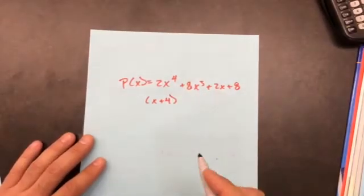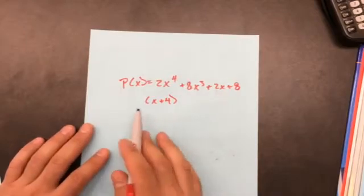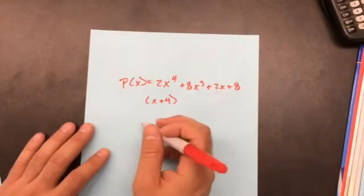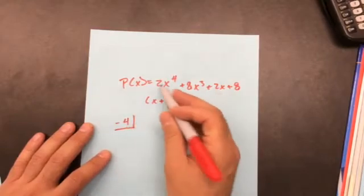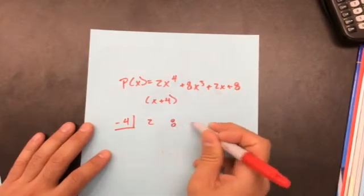Find the other factors. What I'm going to do right here is I'm going to factor this out. So I'm going to use synthetic division. So it's going to be a negative 4. This is going to be a 2, 8, 2, 8.